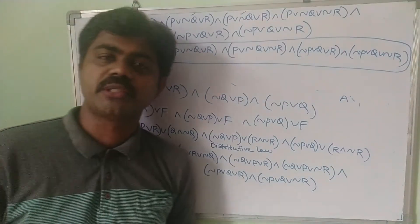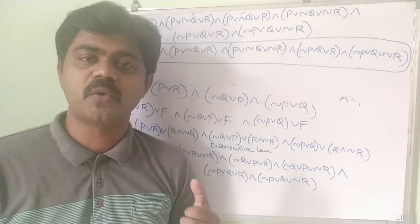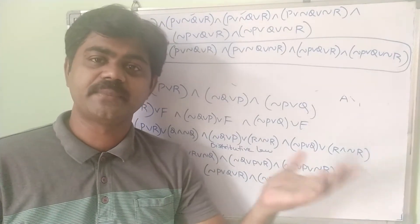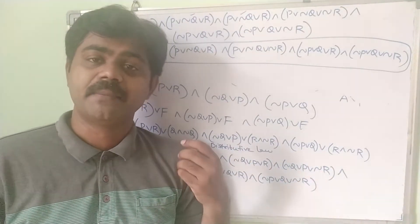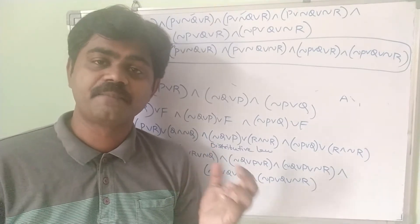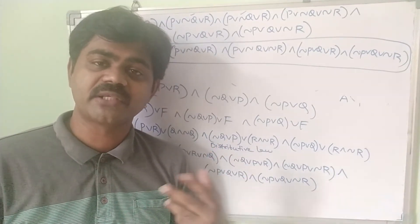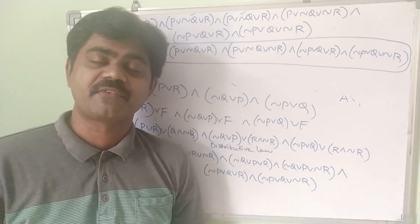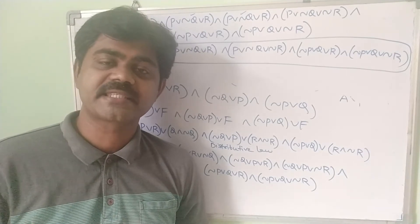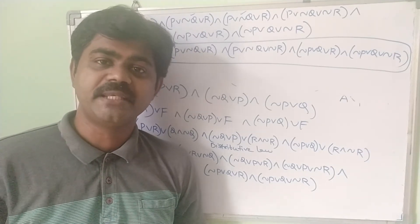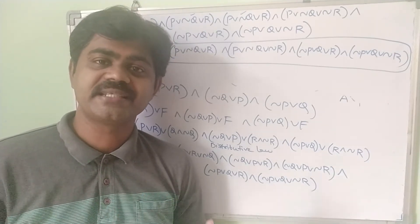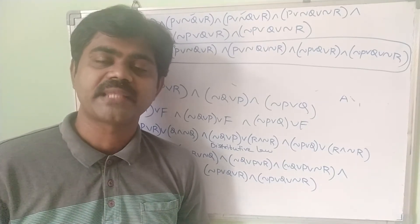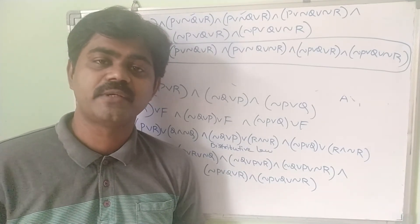I hope you understood clearly how we obtain a Principal Conjunctive Normal Form without using a truth table. In the same manner, you can obtain PCNF both with and without a truth table. I hope you understood the concept clearly. If you are watching our channel for the first time, please subscribe, share our videos with your friends, and support our channel in all possible ways. Thank you very much and have a wonderful day.